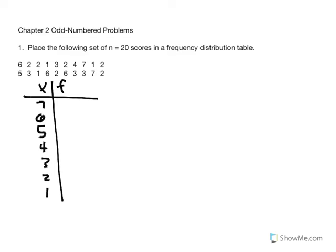We need to identify how often 7 occurred in our distribution. Looking at the top row, it occurred once and twice, so a frequency of 2. Now we're going to identify how often 6 occurred: once, then two times, and then a third time — so it occurred three times. It's good to cross them out to make sure you don't double count, and there are ways to check our answers at the end.